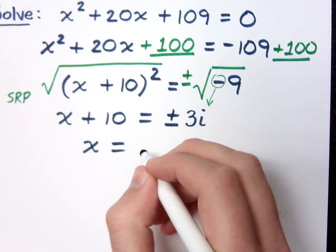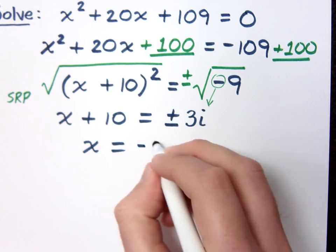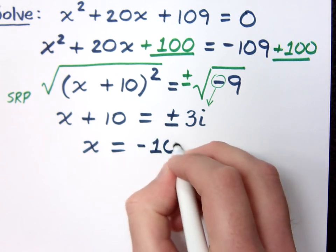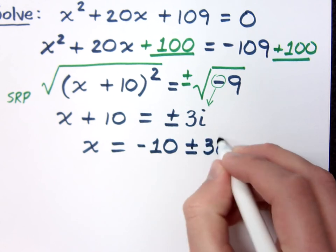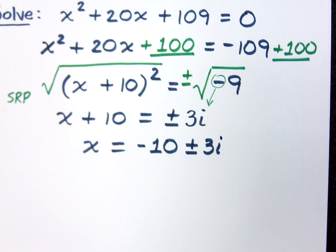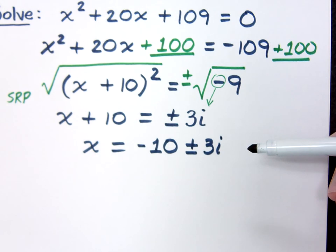And we talked about how when we move things from one side to the other and the plus or minus is already in play, it needs to go in front of that. So I'm going to write negative 10 plus or minus 3i. Now, since I've got the i here, I could separate this, but I'm not going to be able to do any more simplification.